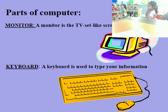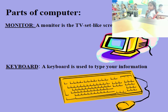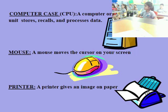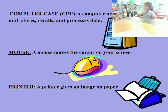The second one is a keyboard. A keyboard is used to type your information. A computer case, or central processing unit, stores, recalls, and processes data.